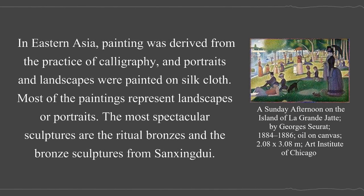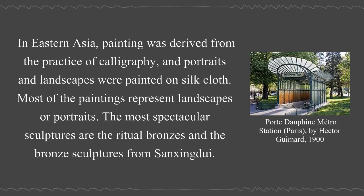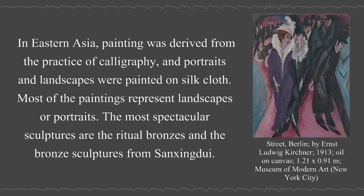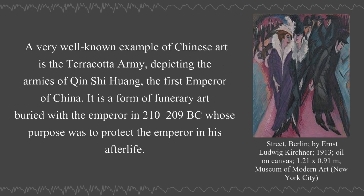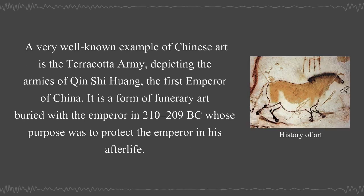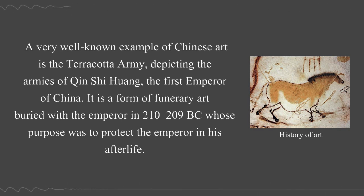In Eastern Asia, painting was derived from the practice of calligraphy and portraits and landscapes were painted on silk cloth. Most of the paintings represent landscapes or portraits. The most spectacular sculptures are the ritual bronzes and the bronze sculptures from Sanxingdui. A very well-known example of Chinese art is the Terracotta Army, depicting the armies of Qin Shi Huang, the first emperor of China. It is a form of funerary art buried with the emperor in 210–209 BC, whose purpose was to protect the emperor in his afterlife.